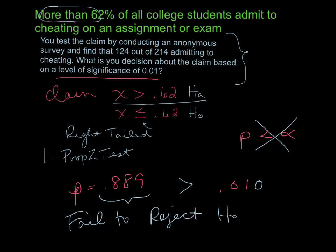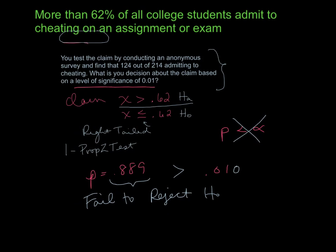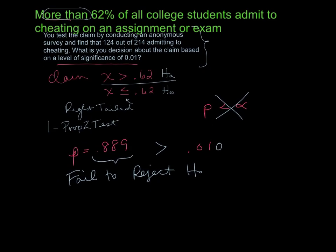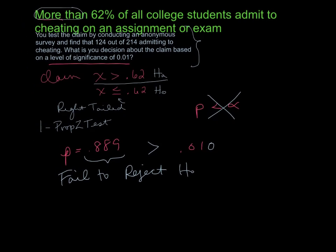And that leads us into our final decision about the claim. We go to the chart because we failed to reject the null and because our claim was an alternative, our claim was H_A. So we failed to reject, our claim was H_A. Our final answer is,